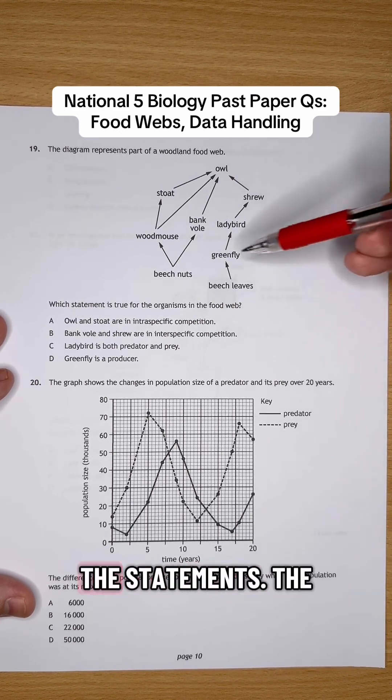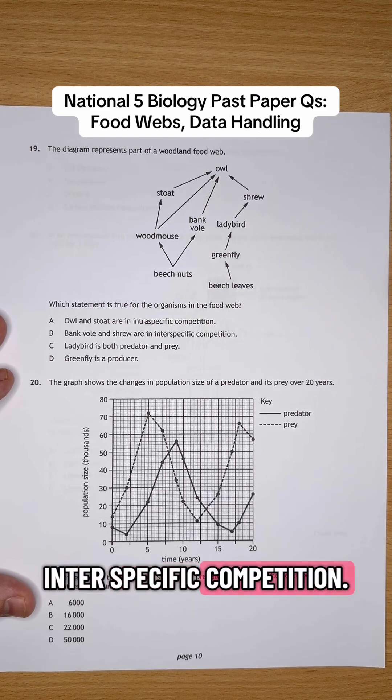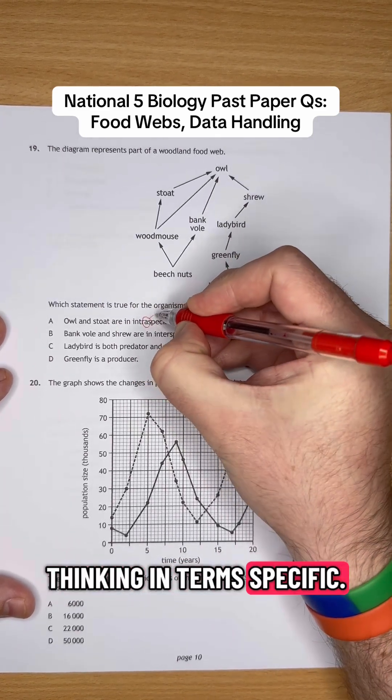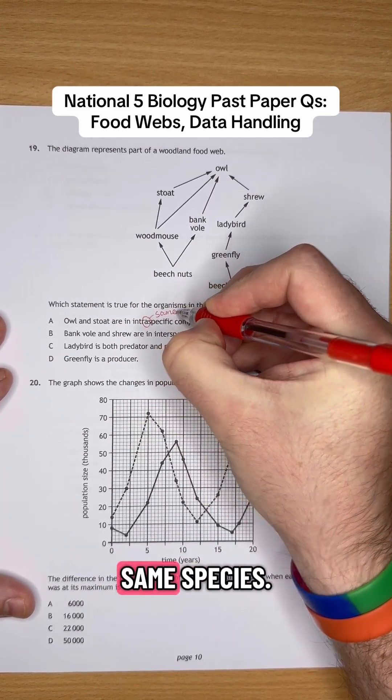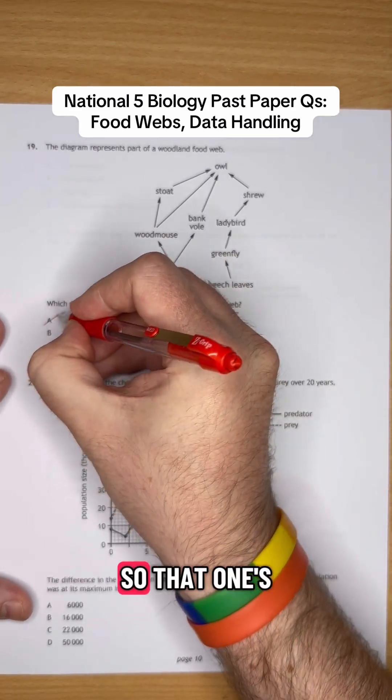Okay, so let's have a look at the statements. The owl and the stoat are in intraspecific competition. So immediately I'm thinking intraspecific, that means that they are the same species. Are owls and stoats the same species? They are not. So that one's not going to be true.